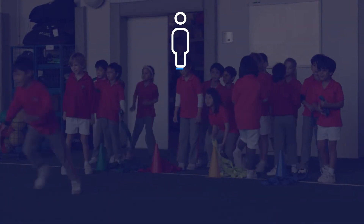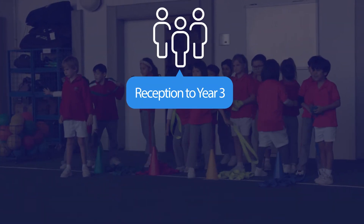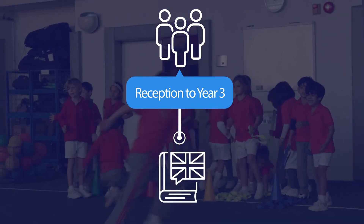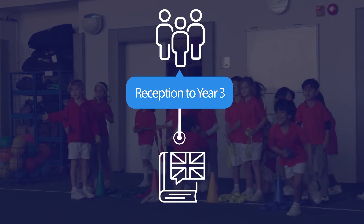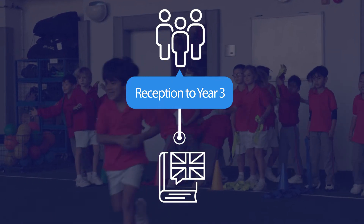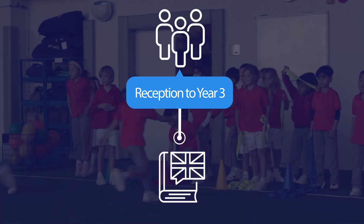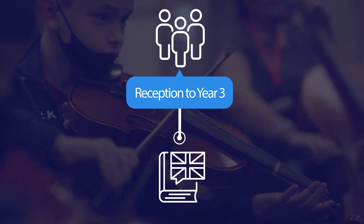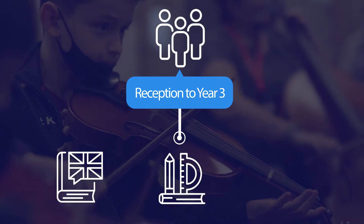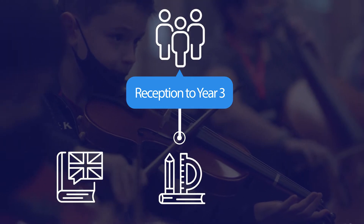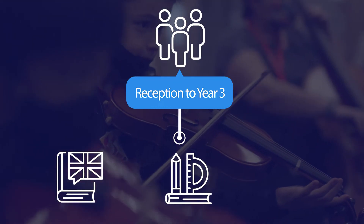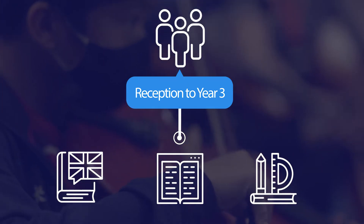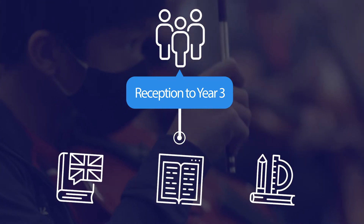Those applying for Reception to Year 3 will be invited to attend an informal assessment where short, age-appropriate activities will be completed. These are mostly language-based, with some numerical activities too. For Years 1 to 3, children will also complete a writing task as part of their session.